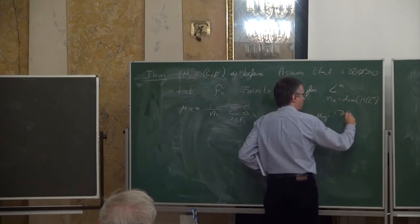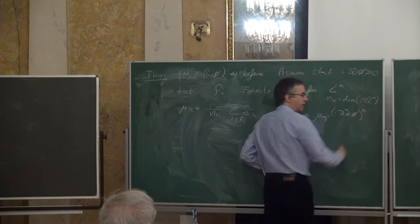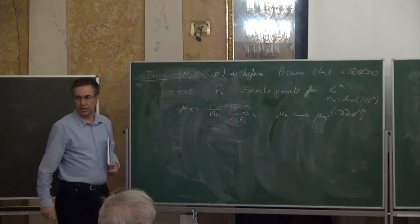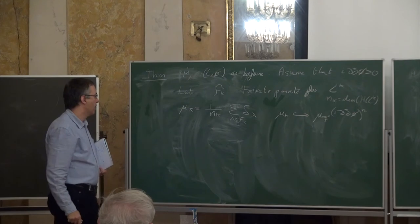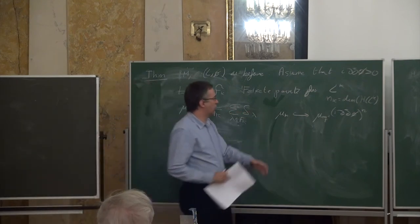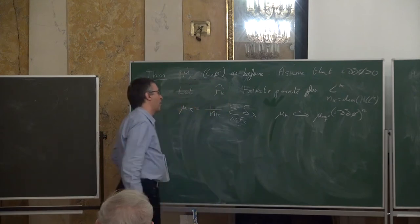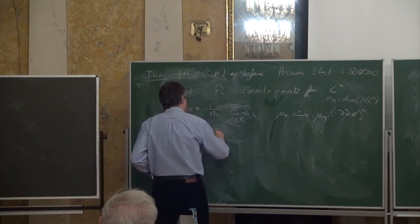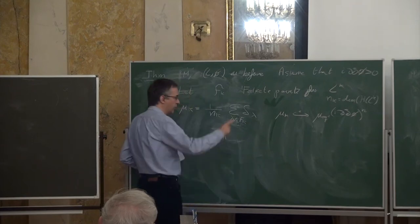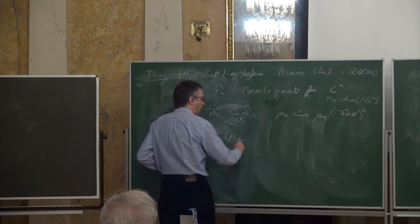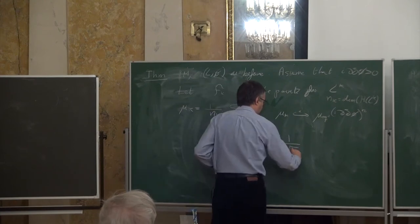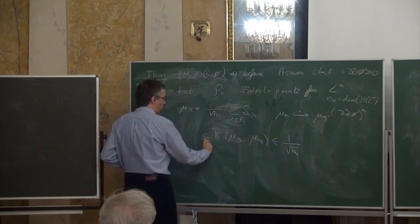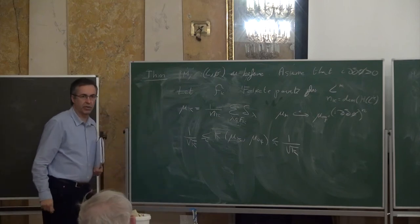The equilibrium measure is the Monge-Ampère of the weight. In dimension one it is just the Laplacian of the weight. The claim is not only that mu_k weakly-star converges to this, but that the Kantorovich-Wasserstein distance of mu_k to the equilibrium measure is comparable to one over the square root of k. This is the rate of convergence.